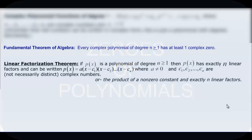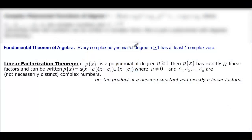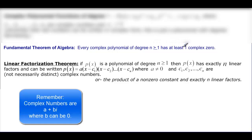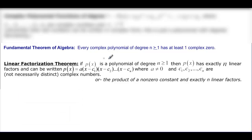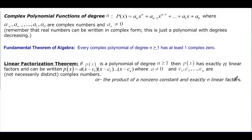This video will talk about zeros of functions. The Fundamental Theorem of Algebra says every complex polynomial with a degree greater than or equal to one has at least one complex zero. Note that 2 is a complex number — it's 2 plus 0i. The Linear Factorization Theorem says a polynomial of degree n ≥ 1 has exactly n linear factors and can be written as a times (x - c₁)(x - c₂)... where a ≠ 0, and c₁, c₂, c₃ are complex numbers, not necessarily distinct.